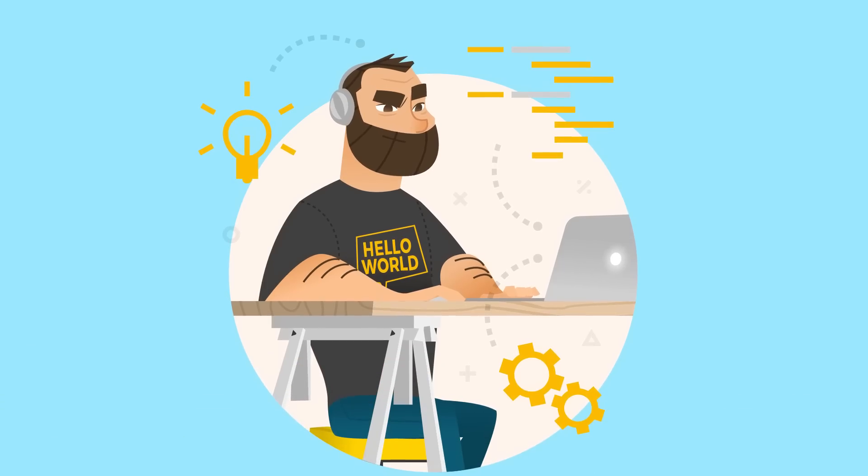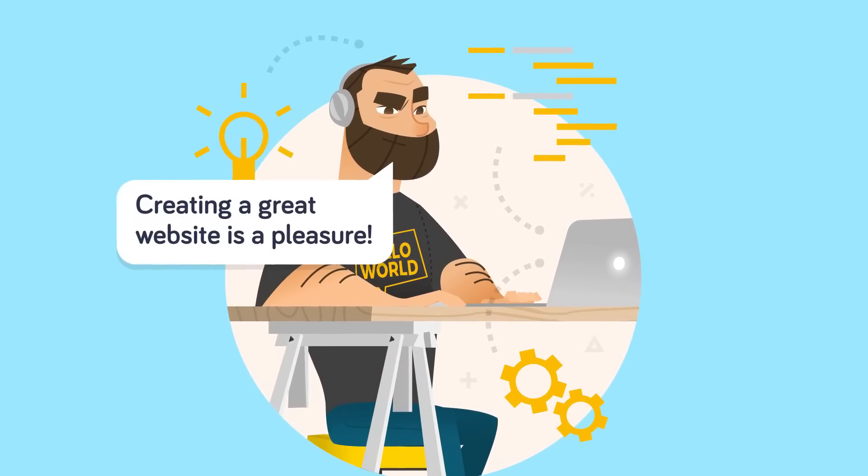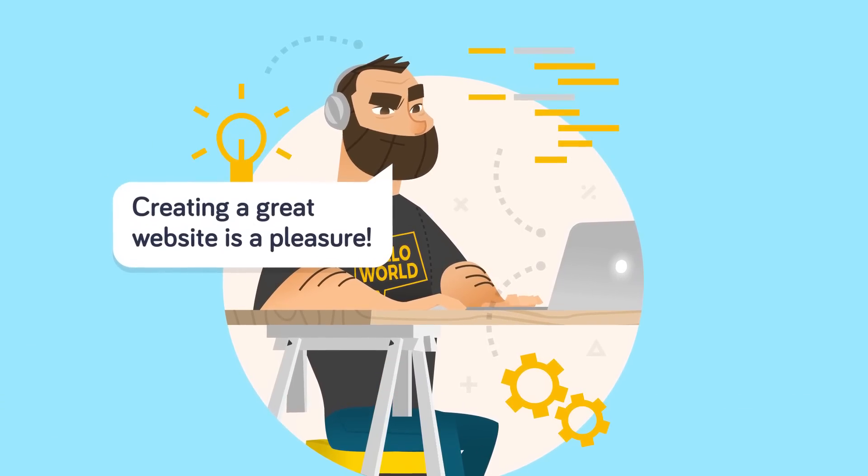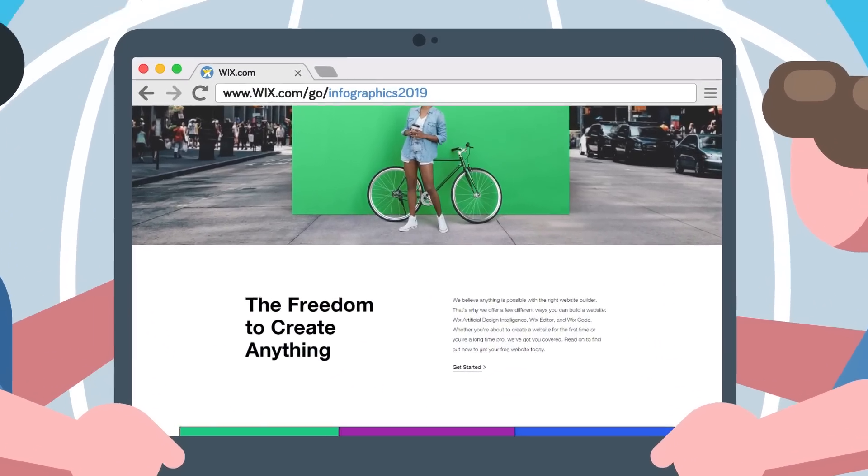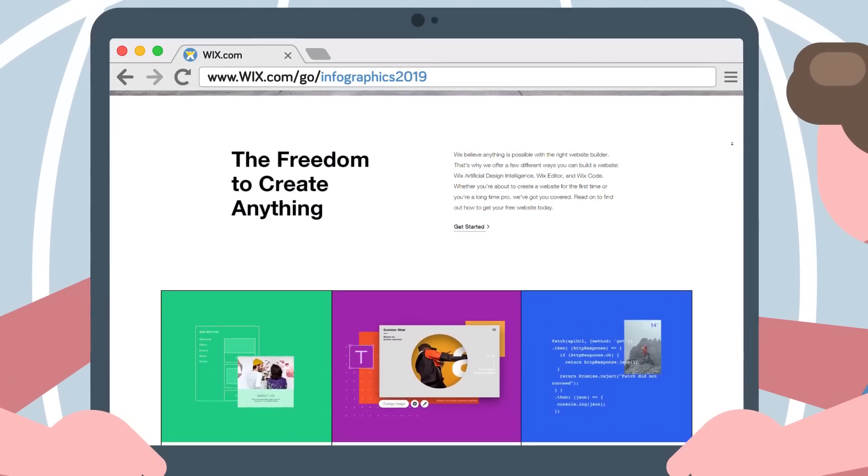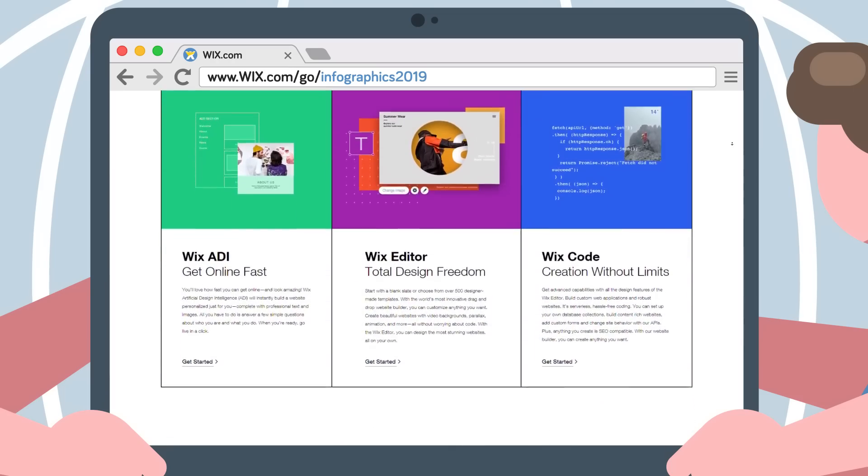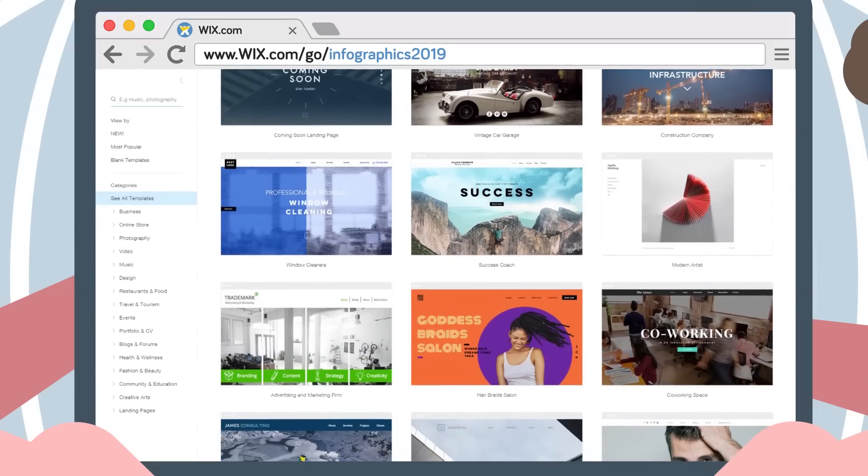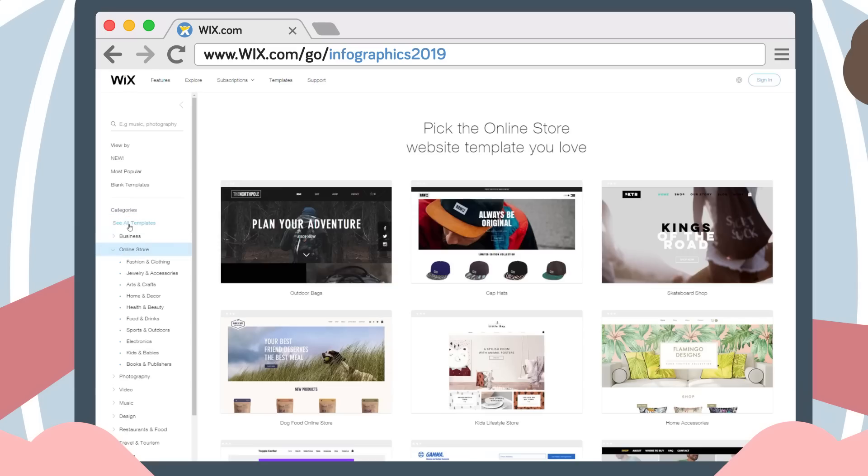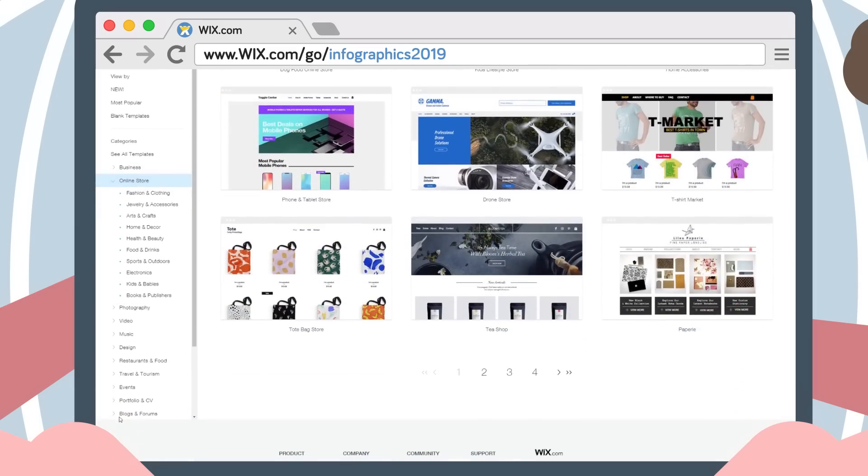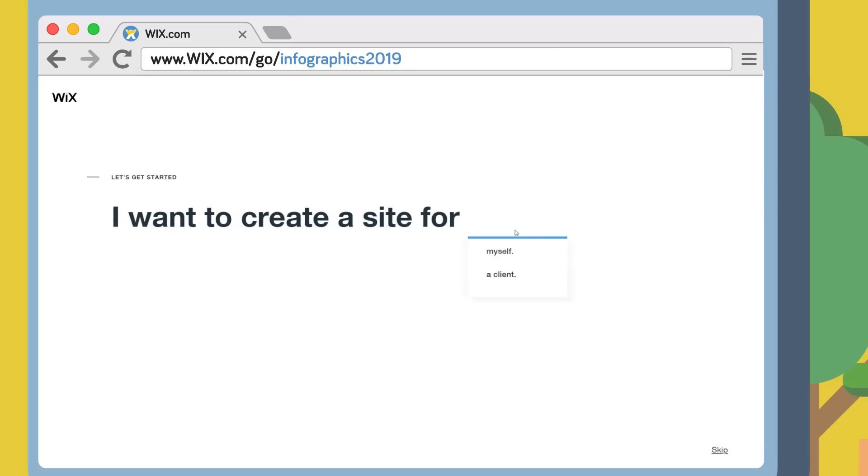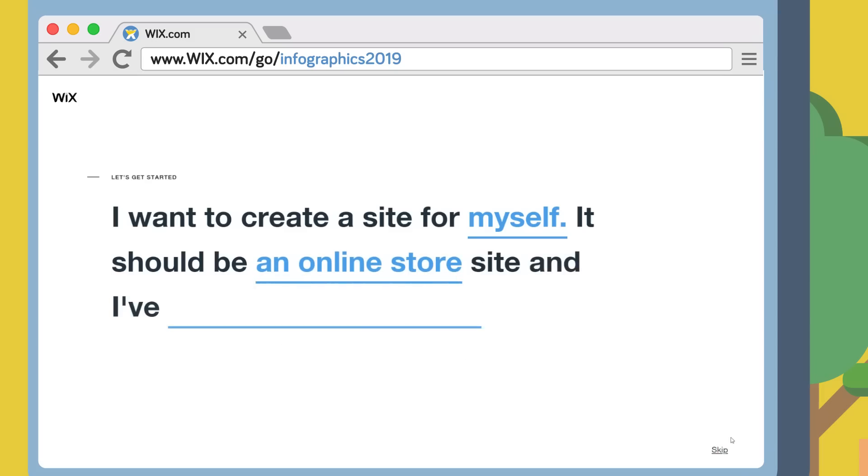We tackled some pretty big and complicated questions here, but you know what doesn't need to be complicated? Building a website. Luckily Wix keeps things simple with their fully customizable templates and easy drag and drop interface. You can have a great looking personal website in no time, and their robust design tools let you get as creative as you want. But if you don't have all the time in the universe, or maybe design just isn't your thing, their powerful ADI feature can whip up a fantastic looking website in seconds just by having you answer a few simple questions. Get started with Wix today by visiting the link in the description, or going to wix.com/go/infographics2019.